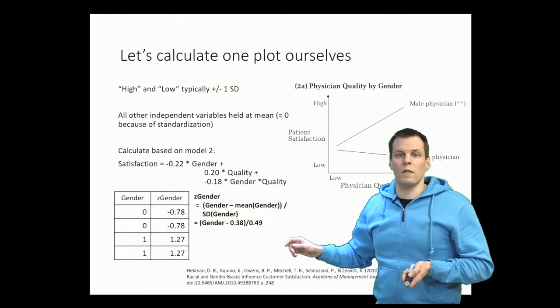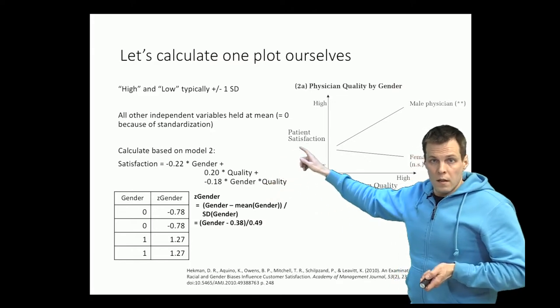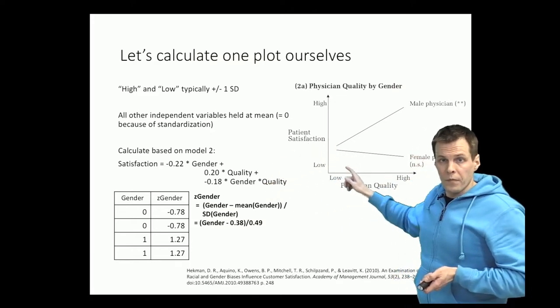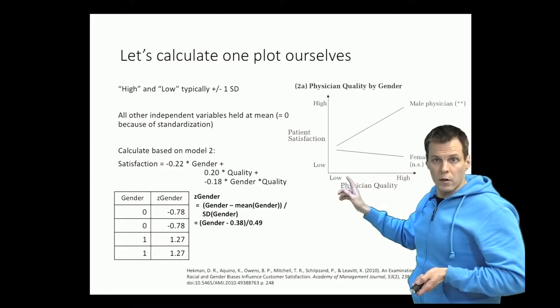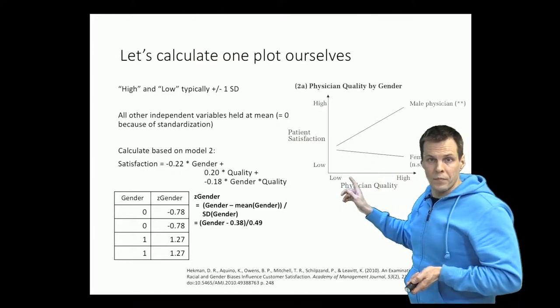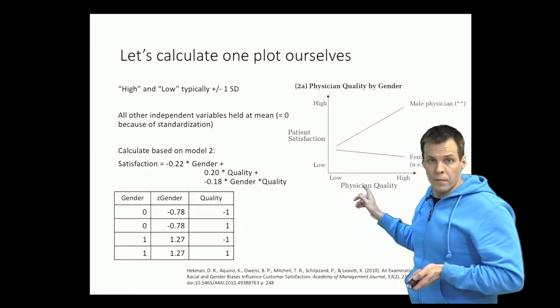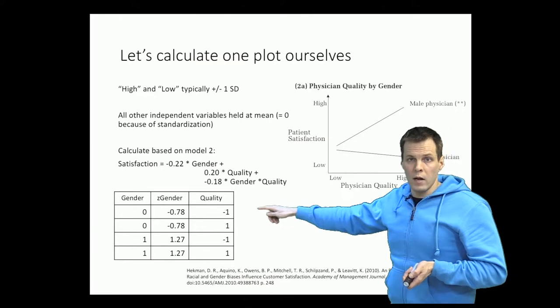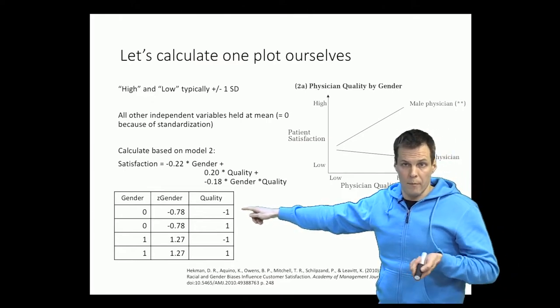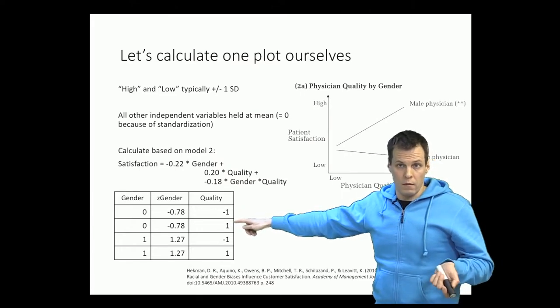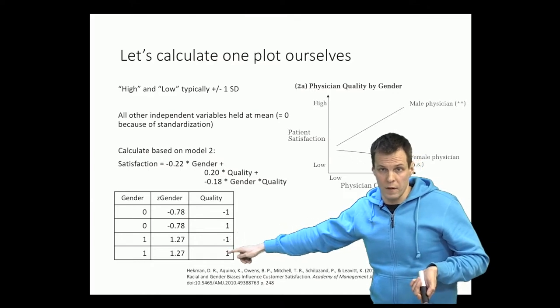Then we need to define what values we have for the quality variable. These high and low conditions are typically plus and minus one standard deviation from the mean. So we set physician quality to either minus one or plus one. So we have here minus one for a man. So that's a bad man. This is a good male physician. This is a bad female physician. And this is a good female physician.